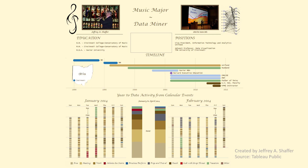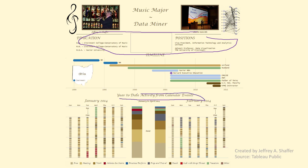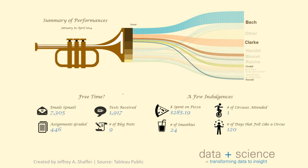Let's see some other great design examples. This is an example done by Jeff Shaffer, created for the Tableau Iron Visualization Competition. It is like a resume of the author, where we can see his education, positions, and yearly date activities. About half of the visualization shows the music concerts he performed at. The last section shows icons and big numbers for various data points he tracked — for example, the number of emails, assignments graded, and text messages received. He took his inspiration from another visualization.